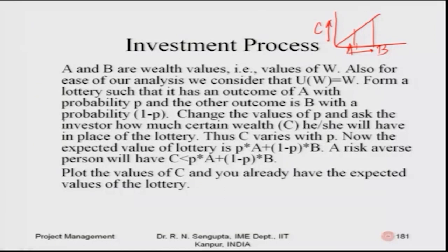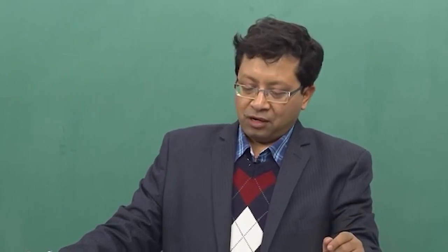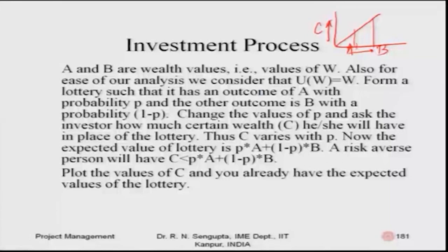Based on the red color diagram, A and B are wealth values — the values of W, which is the wealth in rupees, dollars, euros, or other currencies. For ease of analysis we consider the utility function U(W) as a straight line at forty-five degrees, i.e., U(W) = W.